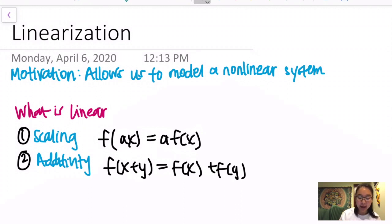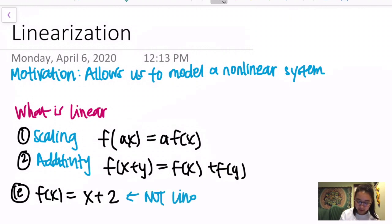Something to keep in mind is that there's a difference between affine functions versus linear functions. As an example, f(x) = x + 2 is not a linear function. That's mainly due to the plus 2 aspect. Instead, this is actually an affine function.